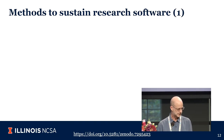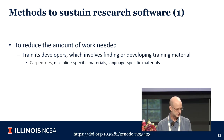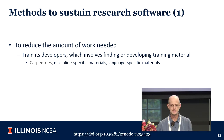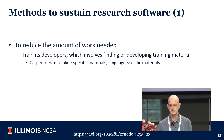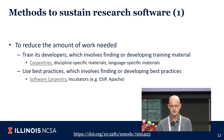To reduce the amount of work needed, we can think about training developers — defining and developing training material. Work like The Carpentries has been doing this at a low level; Code Refinery has been doing this at the next level up. We can also think about best practices for making software sustainable. Software Carpentry has been doing this, and incubators like the Apache Foundation as well.